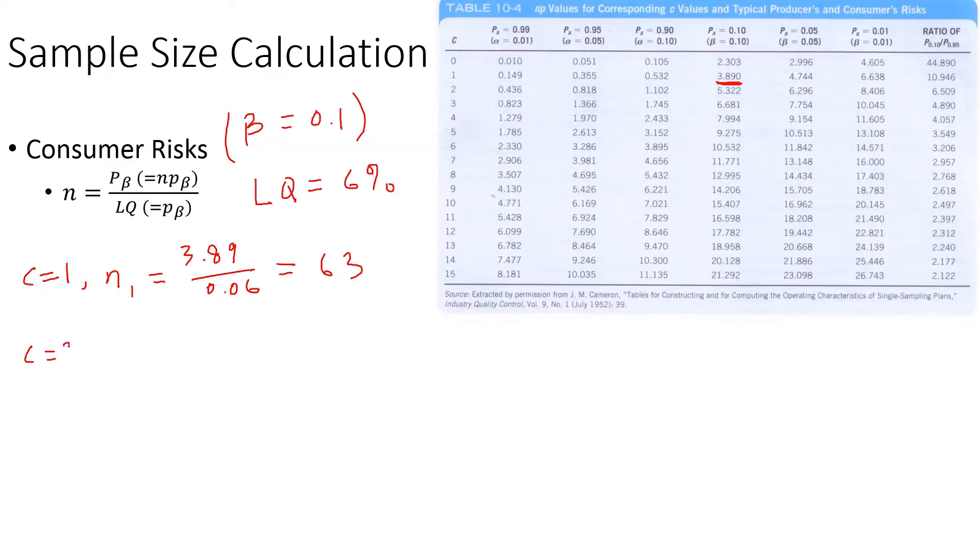I have some pre-calculated values. For C equals 3, the NP value is 6.681 divided by 0.06, which equals 111. If we set C value 7, then this is n7.